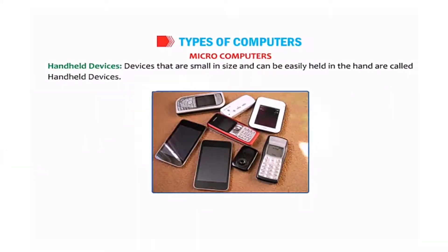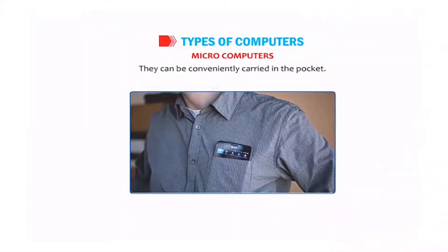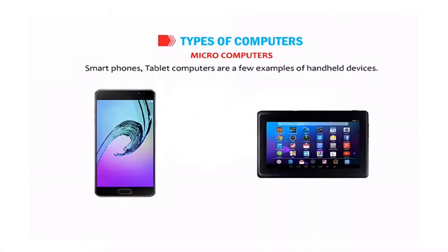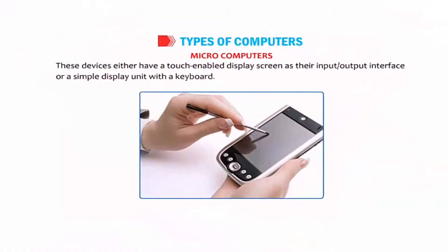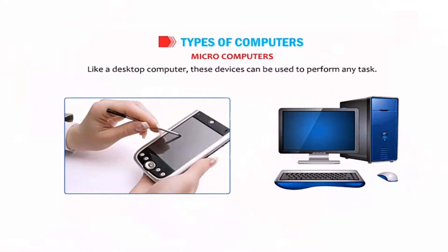Handheld devices are small in size and can be easily held in the hand — that's the reason they are called handheld devices. They can easily be carried in the pocket as well. Smartphones and tablet computers are some examples of handheld devices. Handheld computers are also called Personal Digital Assistants, or PDAs. These devices either have a touch screen as the input-output interface or a simple display unit with a keyboard, and can easily perform any task just like a desktop computer.